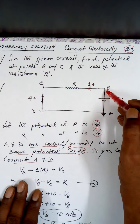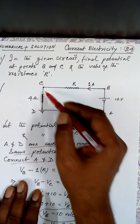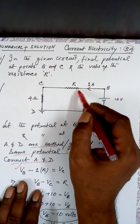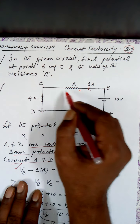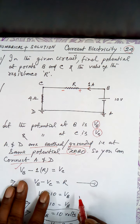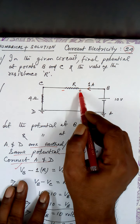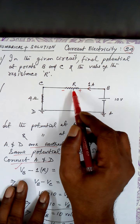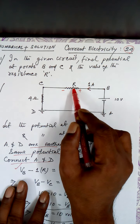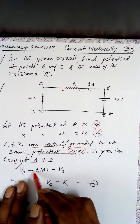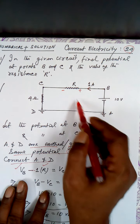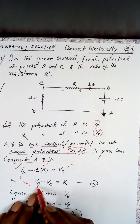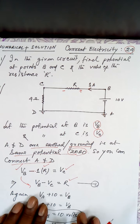Let us go from B to C. The potential at B is VB. Current is entering from this side, so this is plus and this is minus — meaning we go from higher potential to lower potential, a voltage drop. The drop is current into resistance: 1 into R, that is minus IR. I arrive at C, which is VC. So VB minus VC equals R.